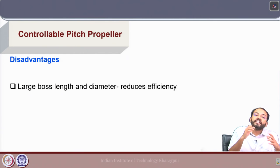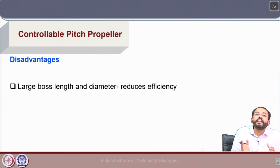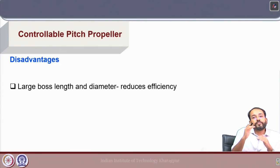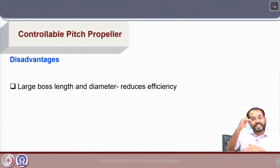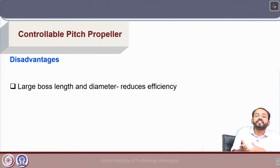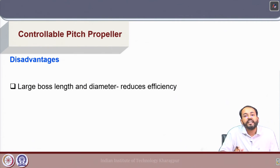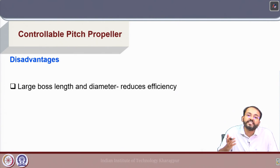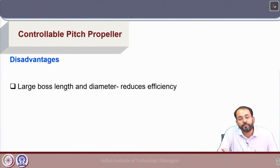Since the available diameter for the propeller blade is lower, the efficiency of the propeller will be reduced. Efficiency is a function of the blade area ratio, and with smaller diameter blades for the same total available diameter, efficiency will be lower compared to a case with a greater available blade diameter.